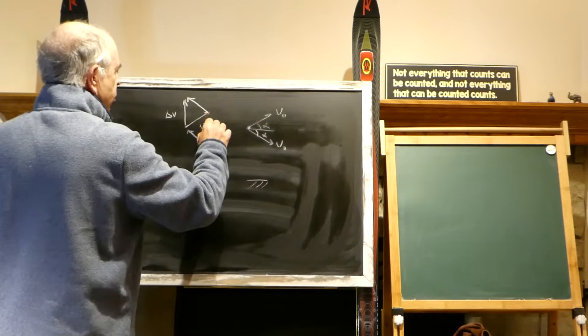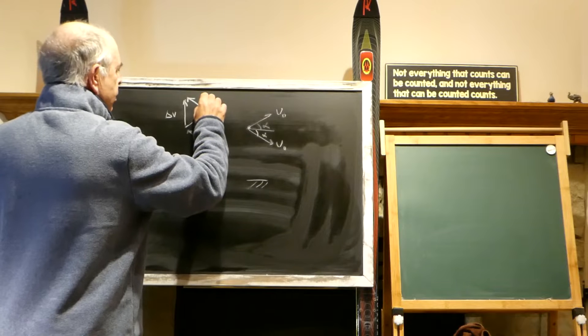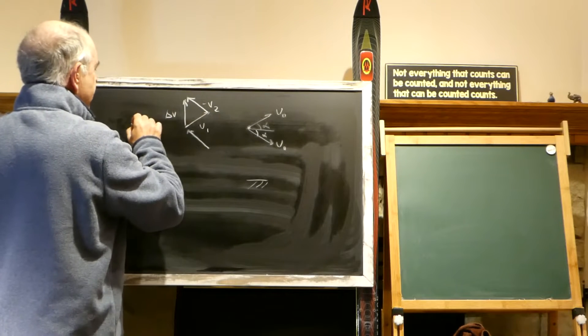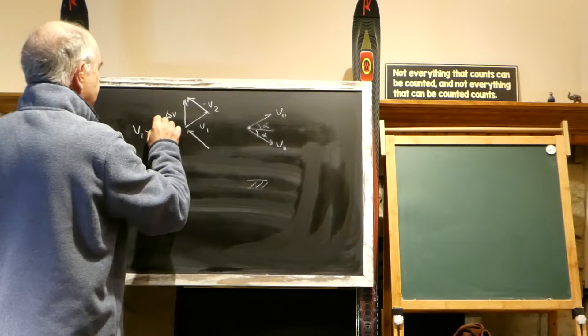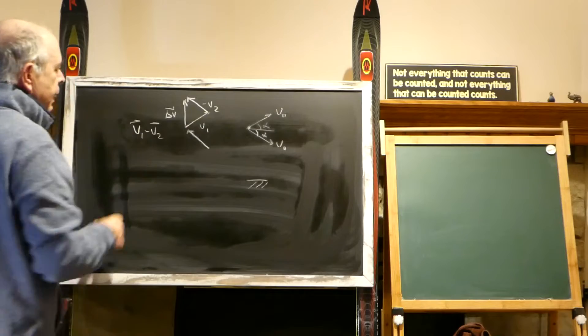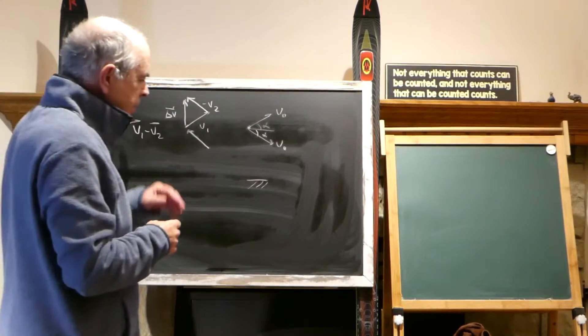This would be v1, this would be v2, and this would be delta v equals v1 minus v2, and those will be vectors. But this is the very beginning.